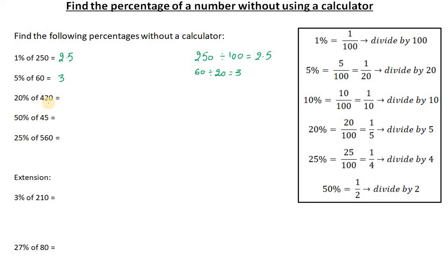20% of 420 - 20% means that we need to divide by 5, so this is just 420 divided by 5. If you can't do it mentally, just use a bus stop.